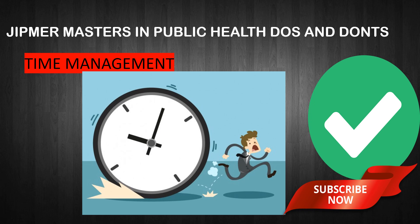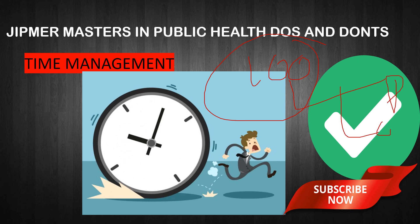I would like to emphasize some important points — please remember and implement them in tomorrow's exam. Time management is the first point; it plays a crucial role in competitive exams. In JIPMER MPH, you will be given 100 MCQs from preventive and social medicine, computer knowledge, and basic English. The time given to solve all 100 MCQs is 90 minutes. Once 90 minutes is done, your screen will be closed and your answer sheet will be automatically submitted.